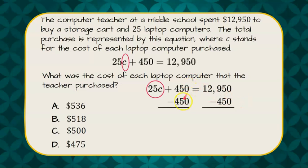So since this is a zero pair this gives us 25C on the left equals and then we subtract and 950 subtract 450 is 500 so 12,500.